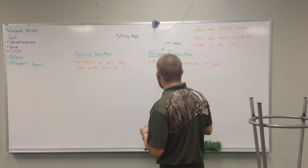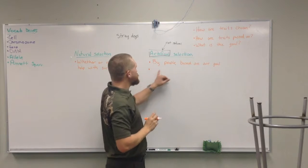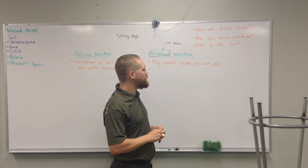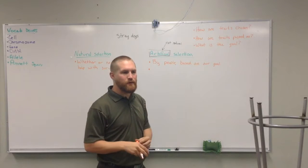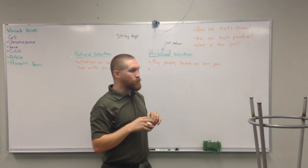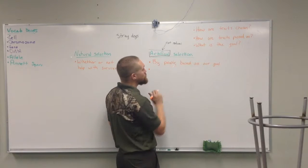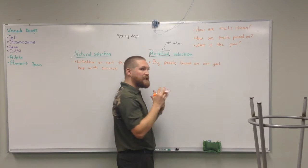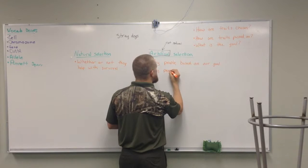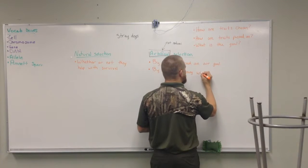The second question is how are traits passed on? In artificial selection, we choose which animals or plants have the best traits and we selectively breed them. We say we want this dog and this dog to breed, or we want to cross these two grapes. We don't leave it up to nature — we make the decision on what plants or animals breed.